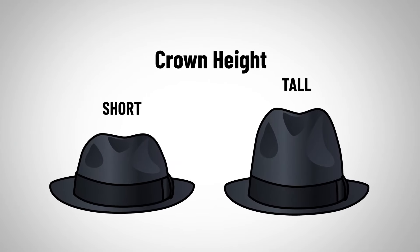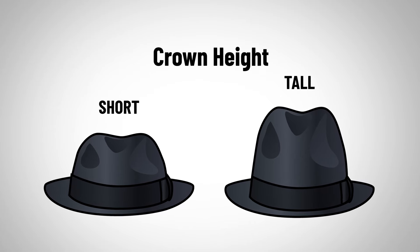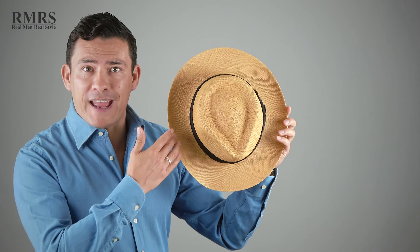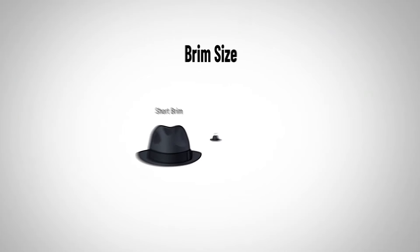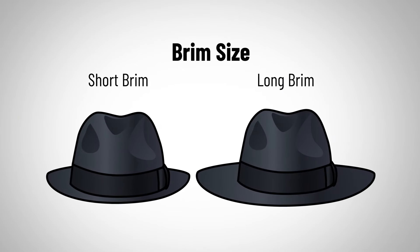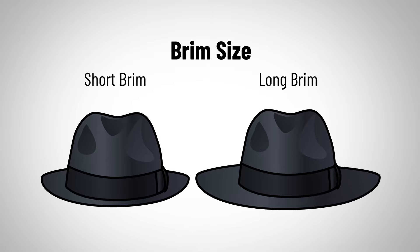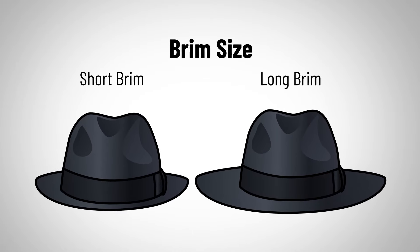Crowns can be tall, they can also be short. The next key feature is going to be the brim. The brim has two factors that affect its look: the width — so if it's a very short brim or a long brim, totally different hat — and the curve and the shape.